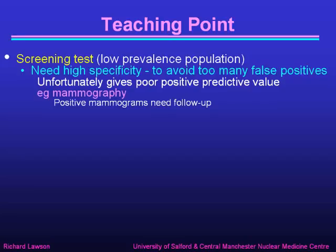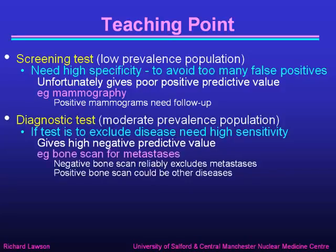A screening test involves a patient population where very few have the disease — a low prevalence. We need high specificity, otherwise we'll have too many false positives, which gives a poor positive predictive value. In mammography, a positive result always needs follow-up. In diagnostic testing in hospitals with moderate prevalence, if the test is set up to exclude the disease, we need high sensitivity, because a high negative predictive value is needed. An example is a bone scan in nuclear medicine to look for metastases — a negative bone scan can reliably exclude metastases.